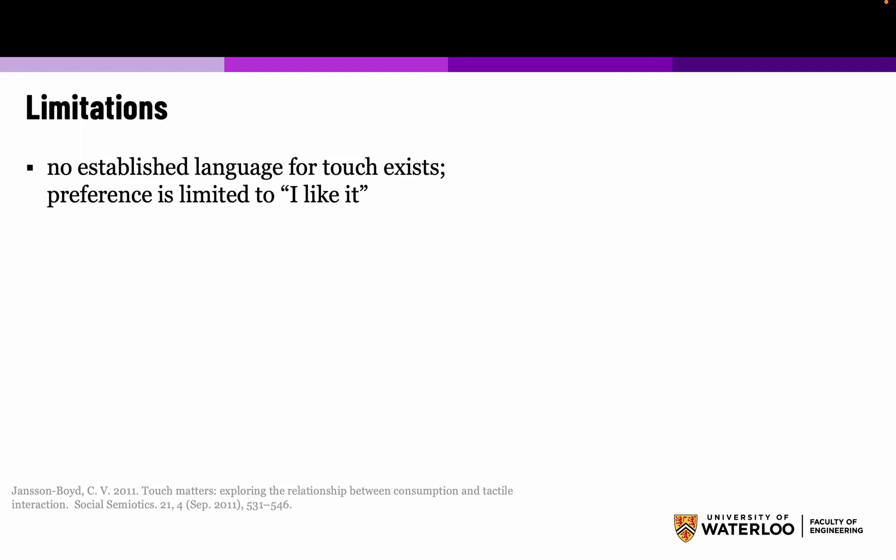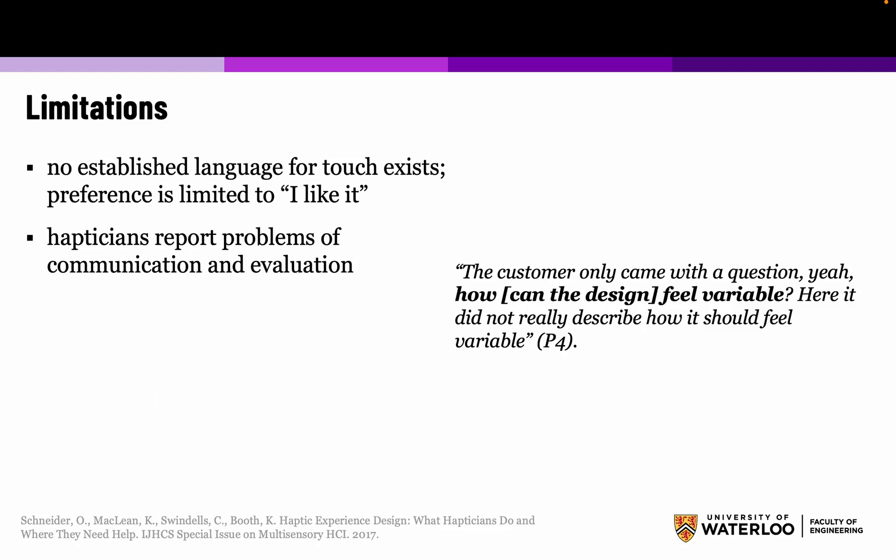Currently, there is no established language for touch. Preference for something is limited to 'I like it' or 'I don't like it,' without being able to express what you like about it. Hapticians report problems of communication and evaluation. A customer might come up to a haptician and say they want to make something feel 'variable,' but neither the customer nor the haptician may know what that means. So there really is an impoverished language surrounding haptics and touch.